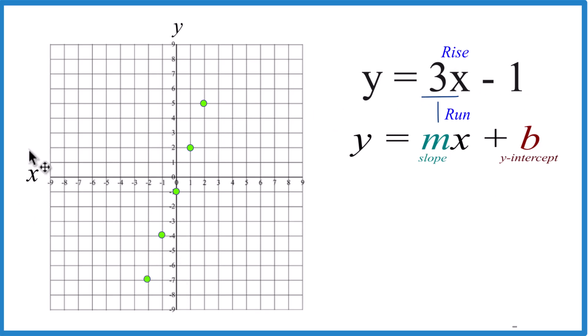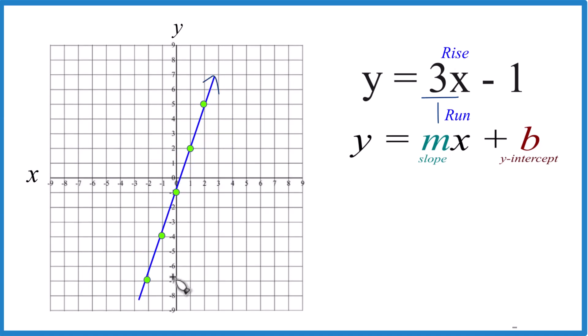That's the graph for y equals 3x minus 1. Let's put a line through it. Then we'll put arrows, show it goes to infinity, and that's it. y equals 3x minus 1. This is Dr. B. Thanks for watching.